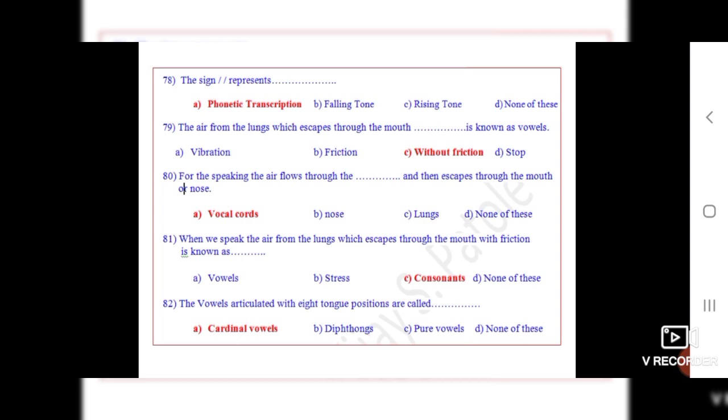Question 78: The sign two slants represents dot dot dot. The correct option is A, phonetic transcription.